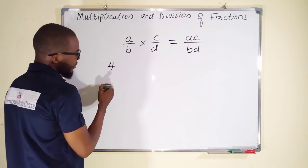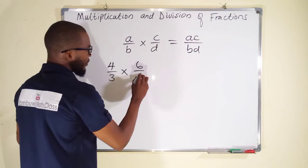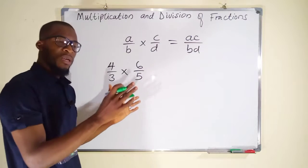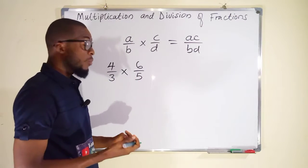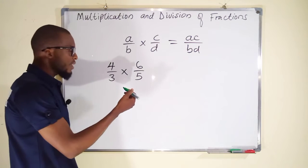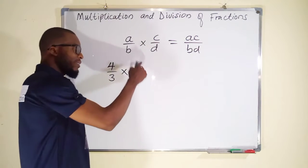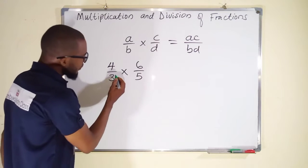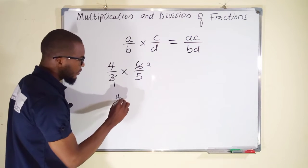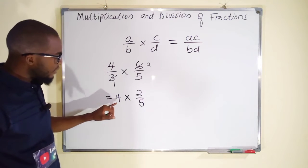Suppose we want to multiply 4 over 3 by 6 over 5. We can directly multiply numerators and denominators then reduce the answer, but it is advisable to reduce first. Here, 4 and 5 have no common factor, and 6 and 3 have no common factor on those diagonals, but 3 and 6 have a common factor of 3. So 3 goes into 3 once and into 6 twice, giving us 4 multiplied by 2 over 5.